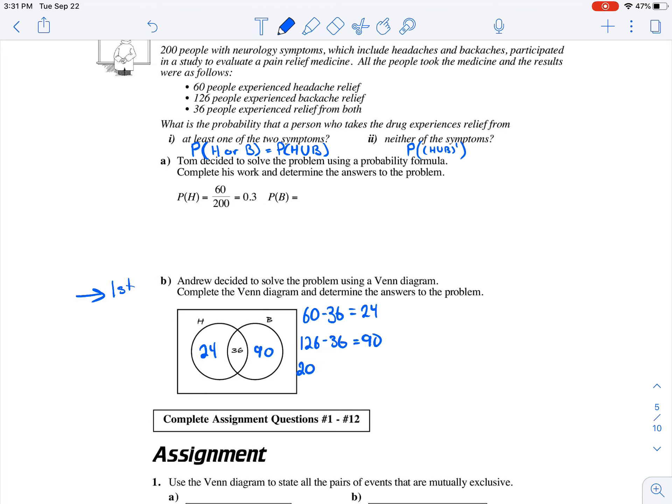And now to figure out what's outside, we're just going to take the total, the 200, and we'll subtract out 24 minus 36 minus 90, which leaves us with 50. So a 50 is placed outside of the circle.